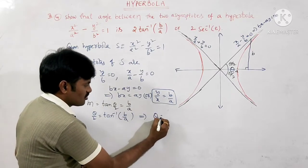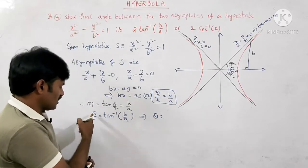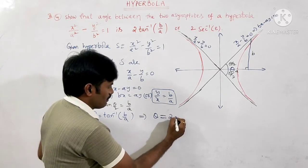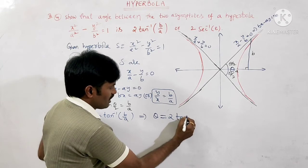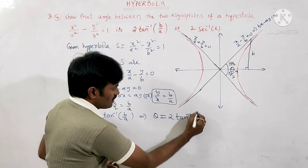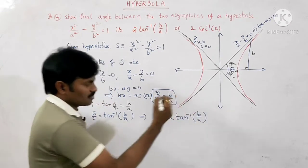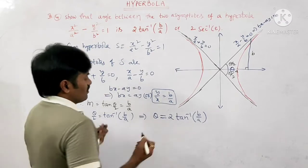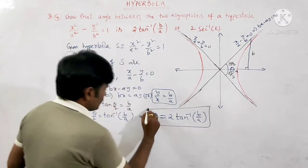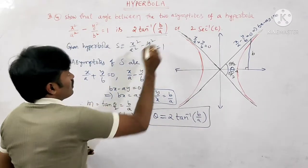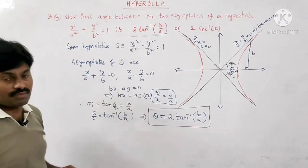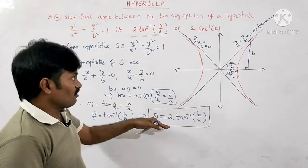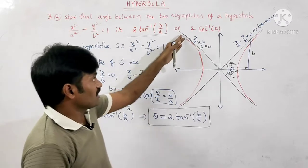From tan(θ/2) = b/a, we get θ/2 = tan⁻¹(b/a). Multiplying both sides by 2, we obtain θ = 2·tan⁻¹(b/a). Now we need to write this in terms of secant.